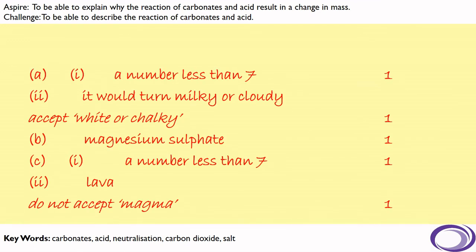Okay, so the first part, any number less than seven. Now, because it was hydrochloric acid, I would say preferably between one and three. It would turn milky or cloudy. So the lime water would be reacting to that carbon dioxide, and that's why we'd see that change. The salt that would be formed is magnesium sulfate.